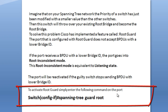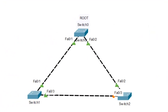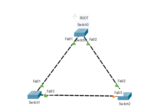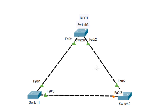Let me go to the scenario in Cisco Packet Tracer. I have three switches: Switch 1, Switch 2, and Switch 3. Switch 3 is the root bridge. This concept of Root Guard should only be enabled on the ports of the root bridge — just keep that in mind — because it helps stop any other switch from becoming the root bridge.